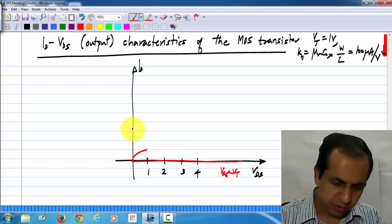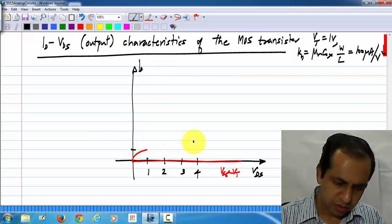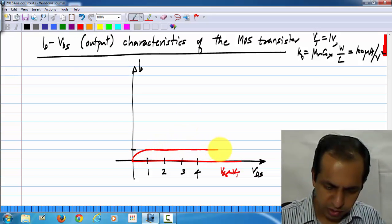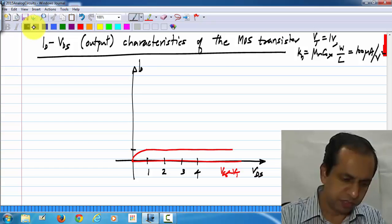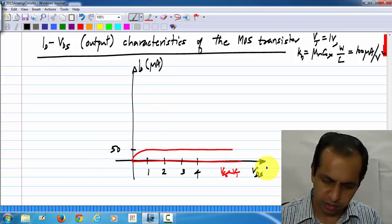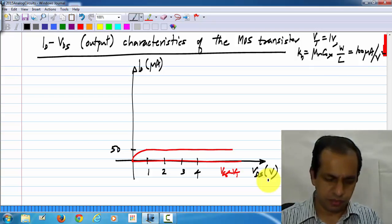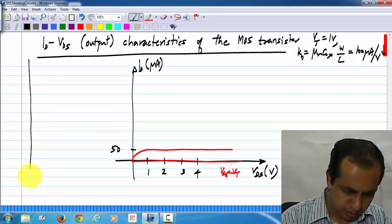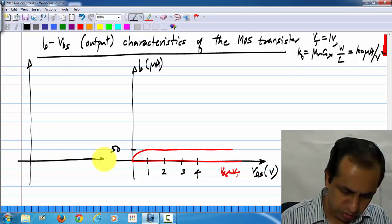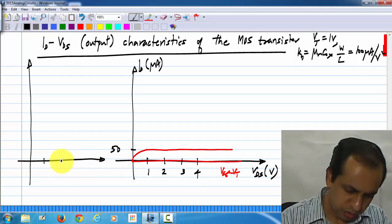And we know that for VGS of 2 volts, the current increases and saturates to 50 microamperes. This is VDS in volts.